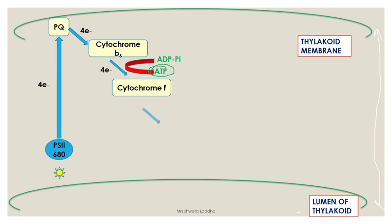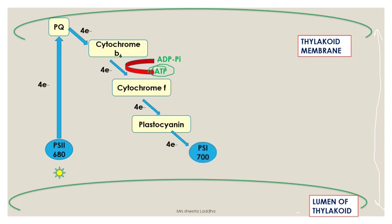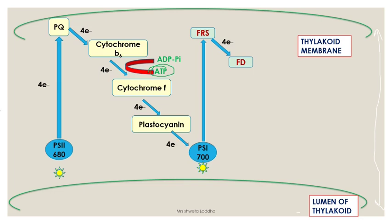Cytochrome F gets excited and releases the electron, which is given to plastocyanin. Plastocyanin gets excited upon receiving the electron and gives the electron to photosystem 1, which has a reaction center, accessory pigments, and operates at 700 nm wavelength. PS1 is receiving solar energy as well as electrons from plastocyanin. It gets excited and loses electrons, which are accepted by ferredoxin reducing substance. Ferredoxin reducing substance then passes the electron to ferredoxin.